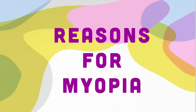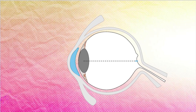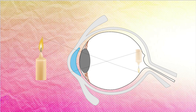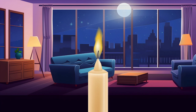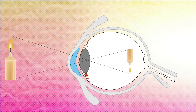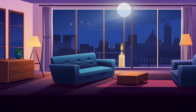Next, we will discuss the reasons behind this condition. There are two main causes. The first is the elongation of the eyeball, which increases the distance between the lens and the retina. In this case, the image of a nearby object forms on the retina, allowing us to see it clearly. However, if the object is far from the eye, its image forms in front of the retina, because the retina has shifted from its original position. Therefore, we cannot see the object clearly.